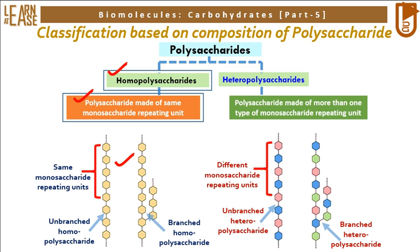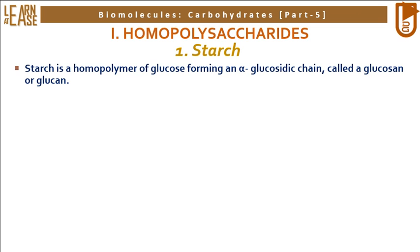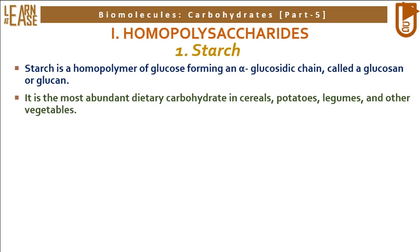In this video I will explain some examples of homopolysaccharides. The first homopolysaccharide is starch. Starch is a homopolymer of glucose forming an alpha-glucosidic chain, called a glucosin or glucan. It is the most abundant dietary carbohydrate in cereals, potatoes, legumes, and other vegetables.